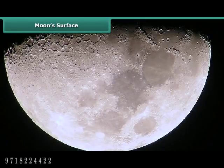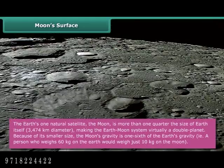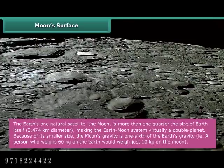The Moon is Earth's one natural satellite and is more than one quarter the size of Earth itself, with a diameter of 3,474 km, making the Earth-Moon system virtually a double planet. Because of its smaller size, the Moon's gravity is one-sixth of the Earth's gravity — a person who weighs 60 kg on Earth would weigh just 10 kg on the Moon.